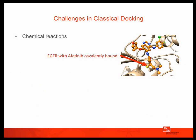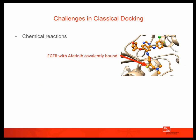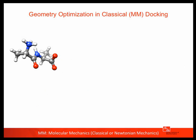The challenges in this classical approach to calculate KDs are that you cannot treat chemical reactions — whenever a bond is formed or broken, you have a problem, because you have to define bonds at the start. For example, EGFR bound to afatinib makes a covalent bond, which is difficult to treat. Another problem is polarization — when you have a highly polarizable ligand, its charge distribution will change in response to the environment, and this is not captured in the classical approach.